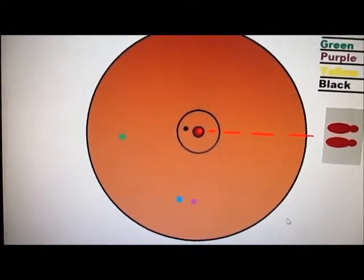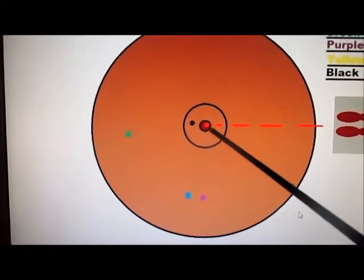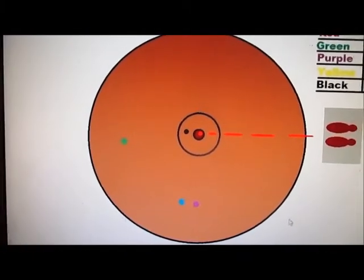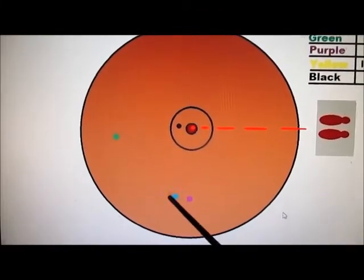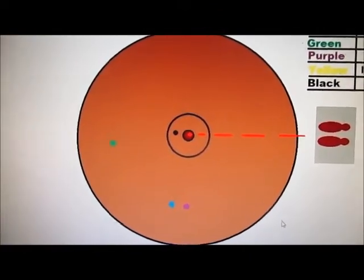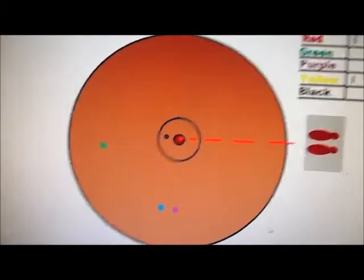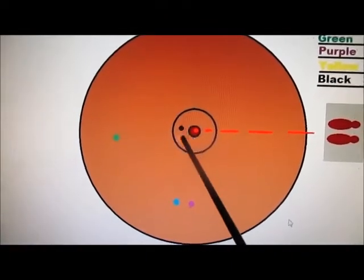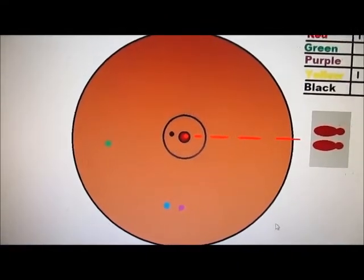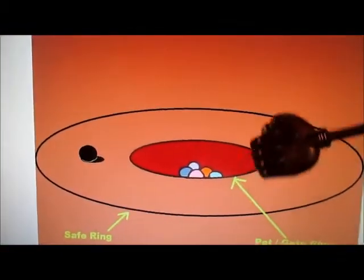In the first scenario, red makes it into the pot. So now red would be the hot character. Blue is no longer hot. Only red is hot now, but red cannot shoot at the black because black is sitting safe.